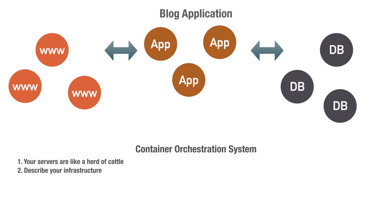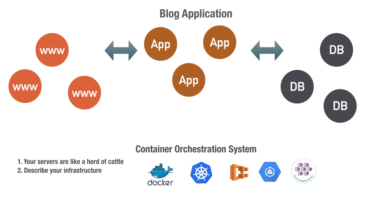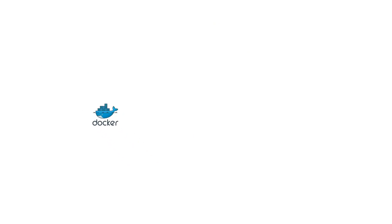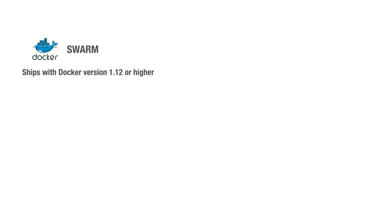There are many existing orchestration systems, like Docker Swarm, Kubernetes, and the cloud providers' own orchestration systems such as Amazon ECS, Google Container Engine, and Azure Container Service, among others. In this class we are going to examine Docker Swarm as an orchestration system example. Docker Swarm comes pre-installed with Docker Engine version 1.12 or later. It enables you to achieve high availability by creating a cluster of one or more Docker engines, called a Swarm.